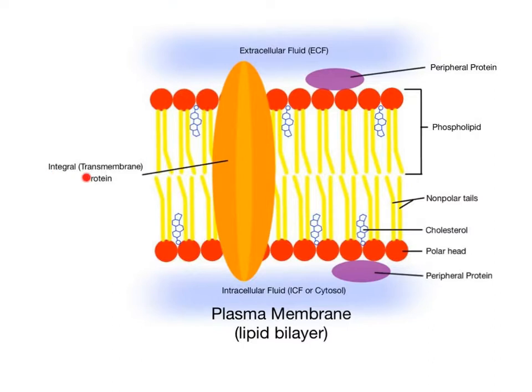The integral or transmembrane proteins cross through both layers of the phospholipid bilayer. The prefix trans means across. They're used for various transport functions in the cell. We say they're integral proteins, which means they're essential, built into the membrane, solidly bound within the bilayer.